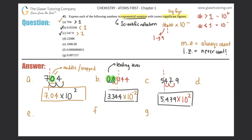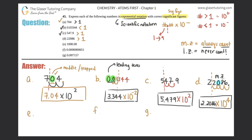Letter D: 22086. No decimal shown, so we assume it's at the end. We move it to after the first non-zero, which takes four bunny hops — times 10 to the fourth. Greater than one, so it's a positive four. There is a zero; do we include it? Yes, because it's a middle zero, trapped between two non-zeros, and middle zeros always count. Final answer: 2.2086 times 10 to the fourth.